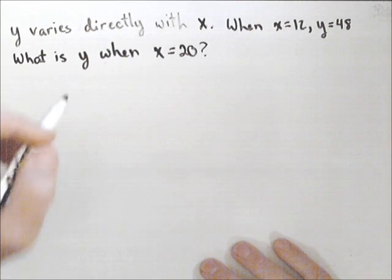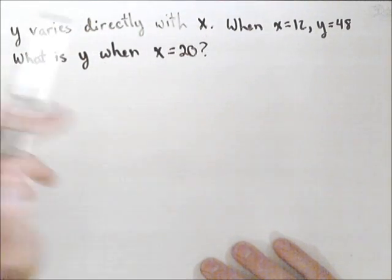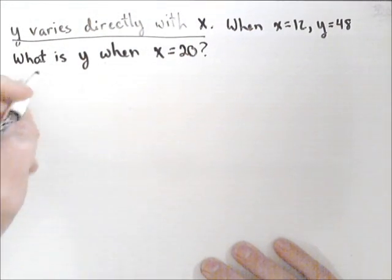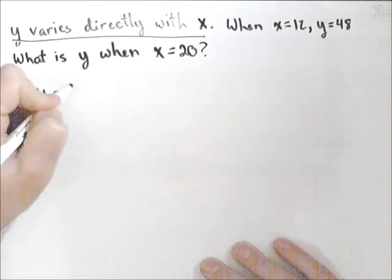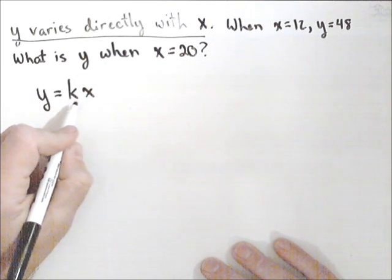In this video, we're going to look at direct variation. So we're given that y varies directly with x. Just from that single sentence, that tells me that the relationship between y and x is proportional, and I can write it out as y equals k times x, where k is what we call a constant of proportionality.